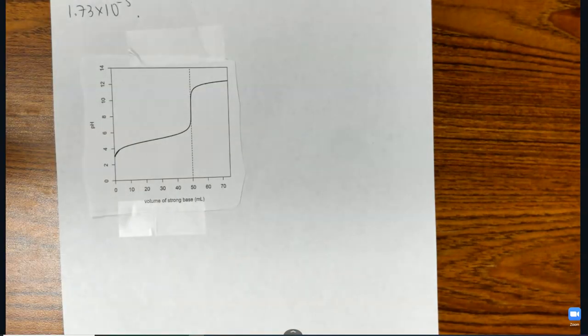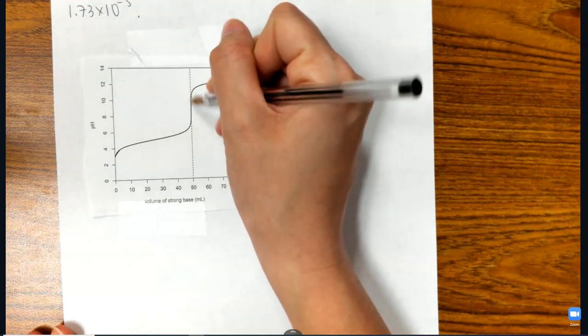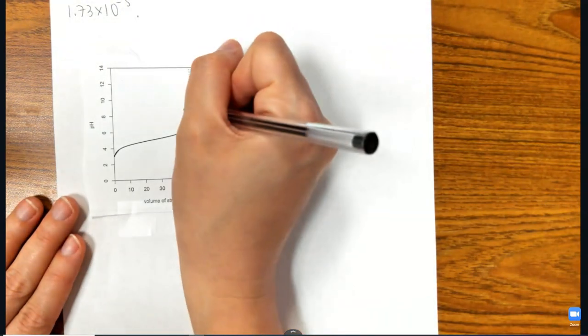The second thing that told me that this was a weak acid-strong base titration is the equivalence point. The equivalence point happens halfway up this vertical slope. And so, and this isn't the best graph, so I'm guesstimating, but halfway up it is about right there.